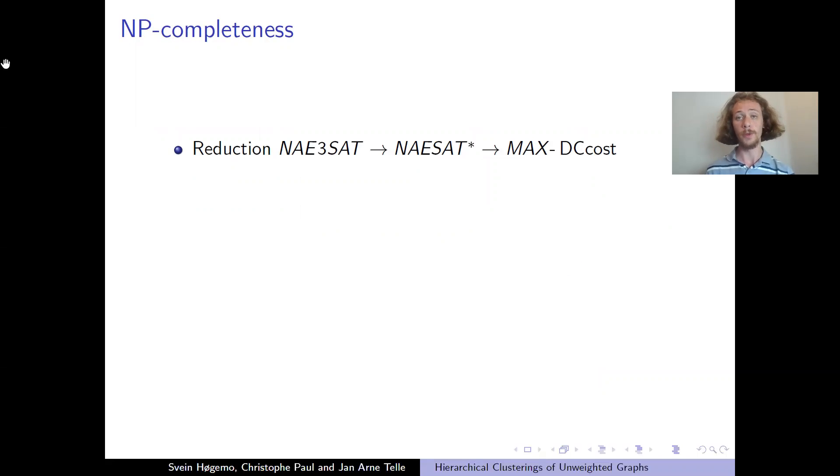In his paper where he introduced this measure, Das Gupta showed that finding a clustering optimizing this measure is NP-hard, which is hardly a surprise. He showed this by reducing from a problem he made himself, from NAE-3SAT*, which is easily reducible from the well-known not-all-equal 3-SAT.